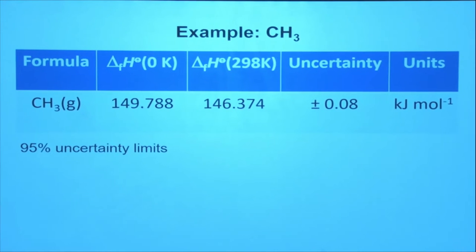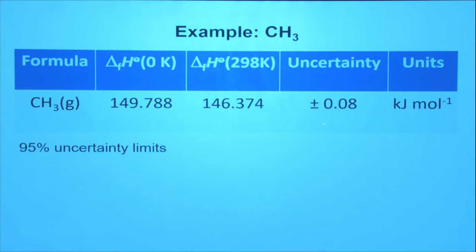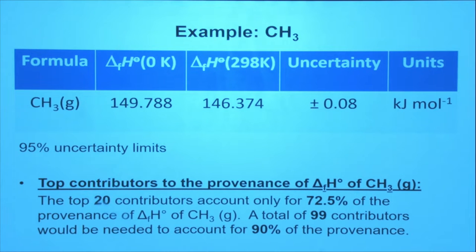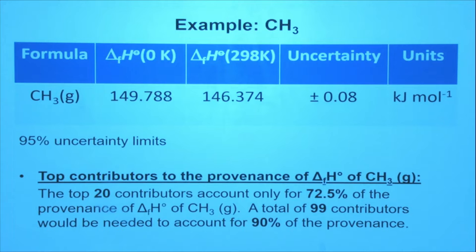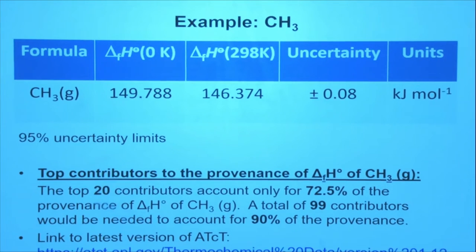If we take the CH3 radical — this is of course very, very connected through the network — and so it will be subject to a large volume of data. As a result, the uncertainty in its heat of formation is extremely small: 0.08 kilojoules per mole at 95% confidence — two sigma. The network tells you that there are 20 different data sets that account for 72.5% of the provenance on that. If we want to account for 90% of the provenance, then that's nearly 100 different data sets that have contributed. Obviously, the more high-quality data sets coupled to a species through the network, the lower the uncertainty is going to be.